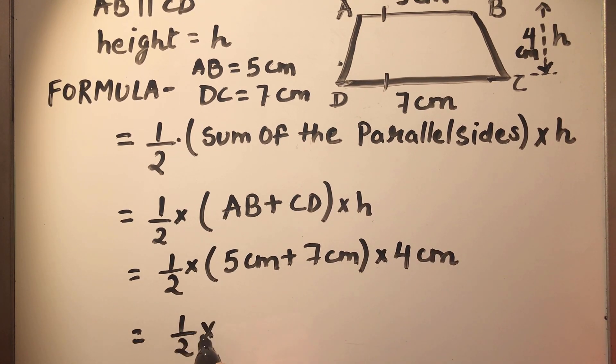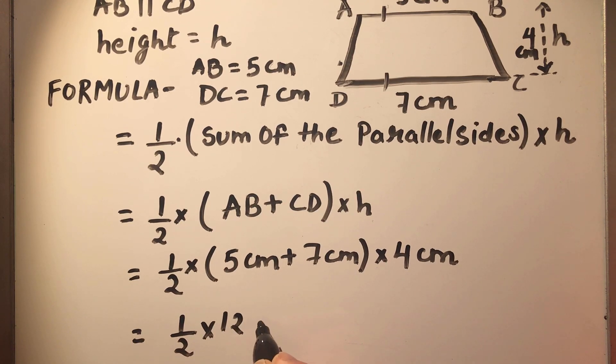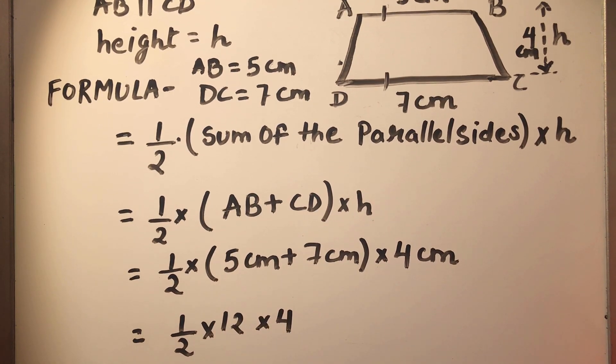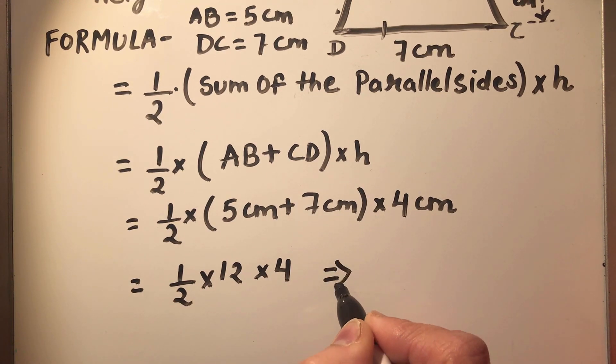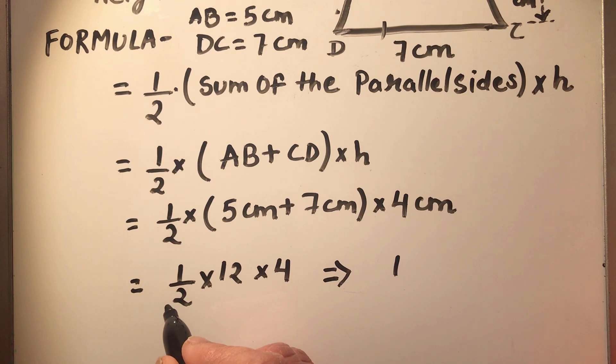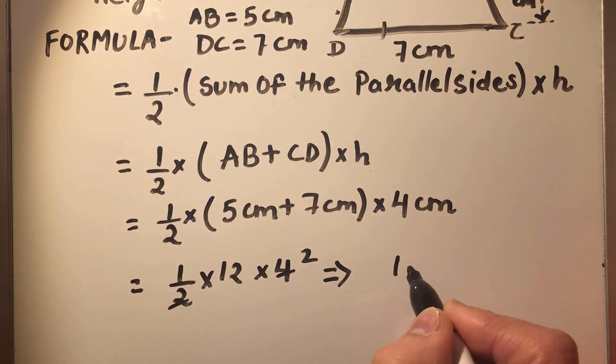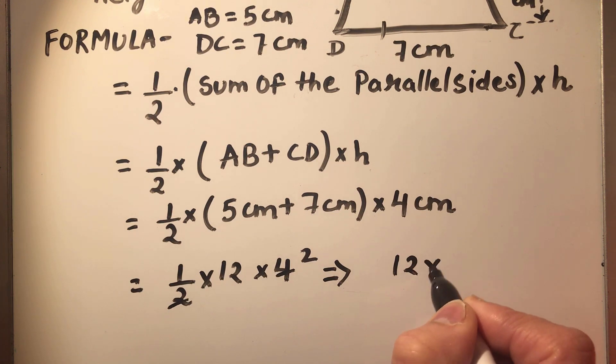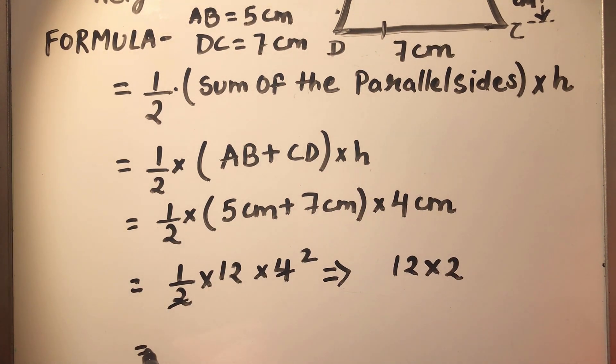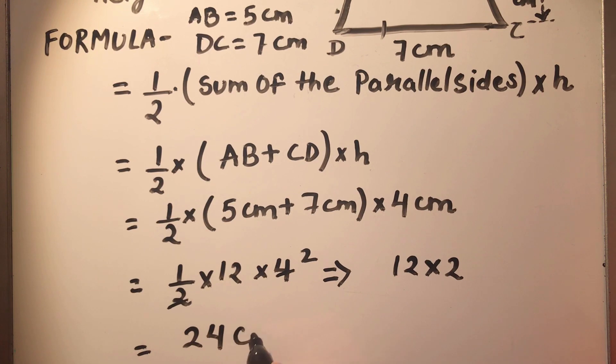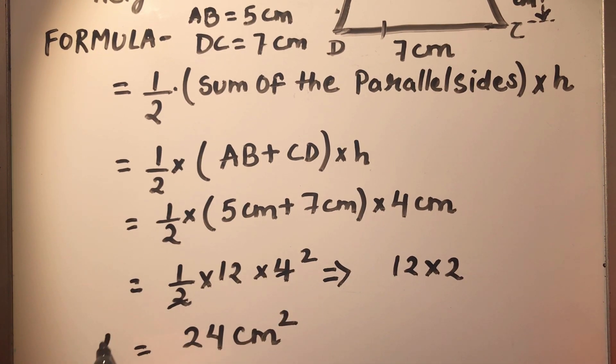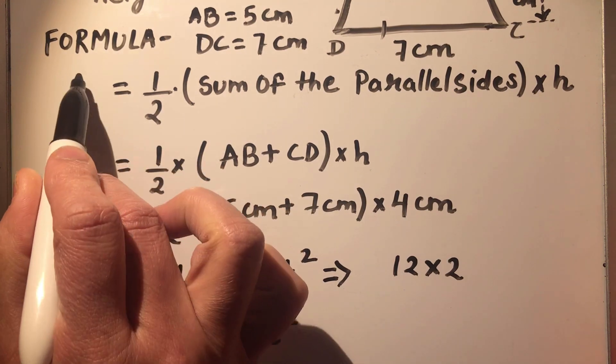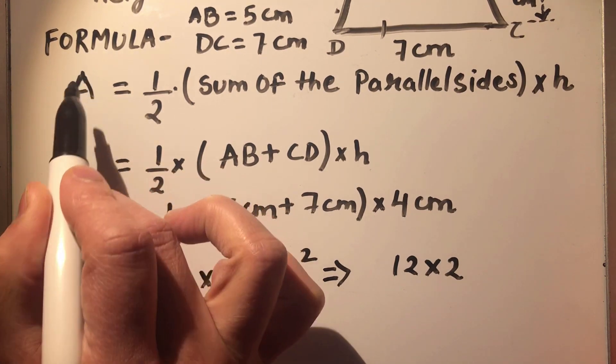So this is going to be half times 12 times 4, which gives us 12 times 2, which is 24 centimeters squared.